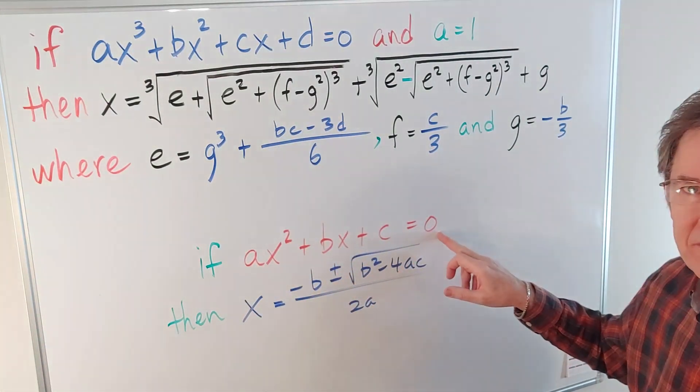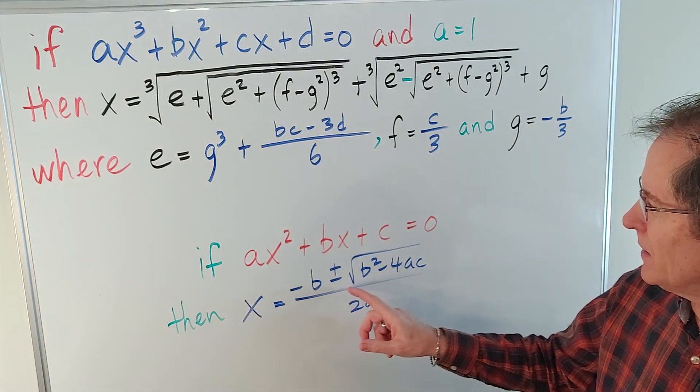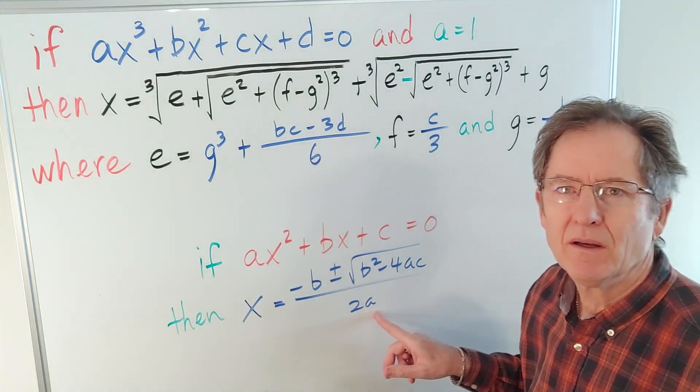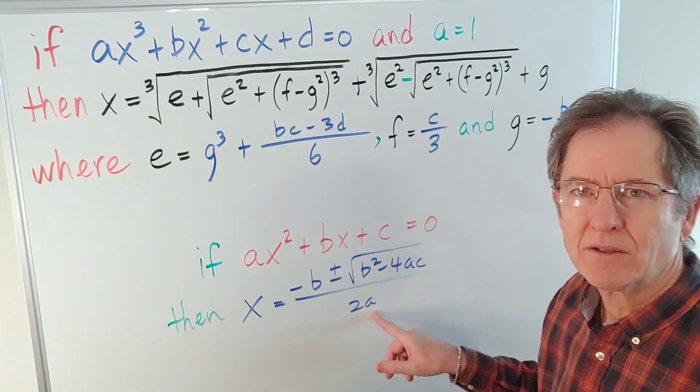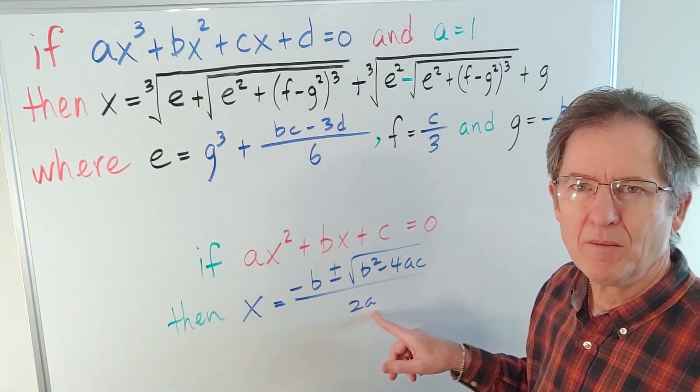In that case, the values of x that can make it zero are negative b plus or minus the square root of b squared minus 4ac over 2a. And you can get either two answers, one answer, or no real answers, depending on the values of a, b, and c.